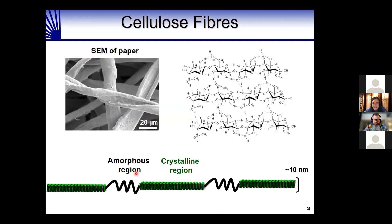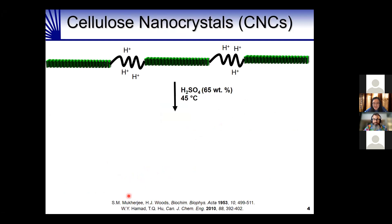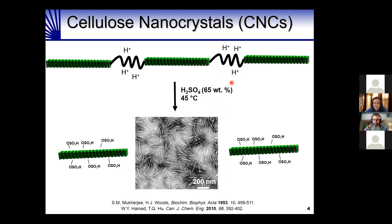These polymer chains subsequently hydrogen bond to form crystalline domains of cellulose surrounded by amorphous regions. In a regular piece of paper there are crystalline domains and amorphous or gummy regions. It was shown in the 1950s that if you treat paper with sulfuric acid under the right conditions, you can selectively remove the amorphous regions and isolate nanocrystals of cellulose. These cellulose nanocrystals are a couple hundred nanometers long and maybe five or ten nanometers in diameter.